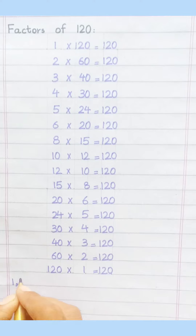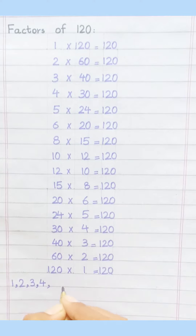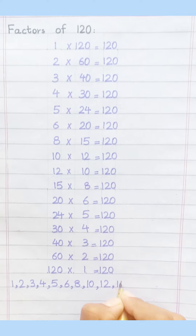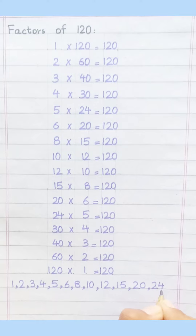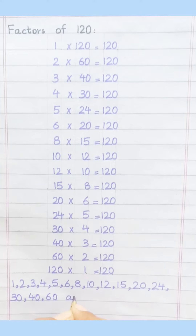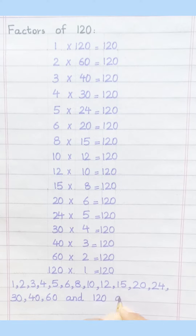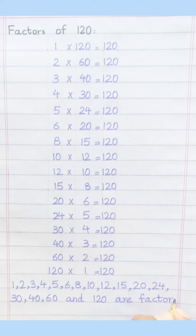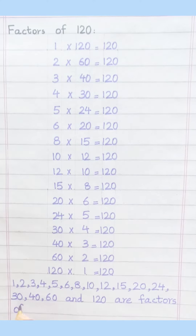One, two, three, four, five, six, eight, ten, twelve, fifteen, twenty, twenty-four, thirty, forty, sixty, and 120 are the factors of 120.